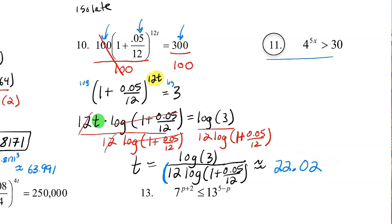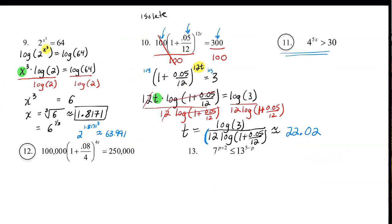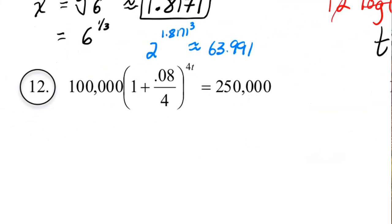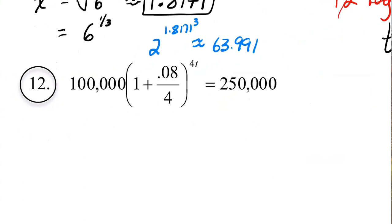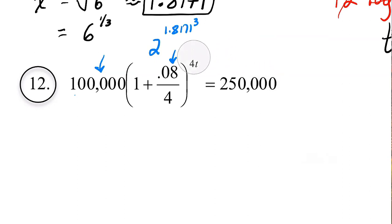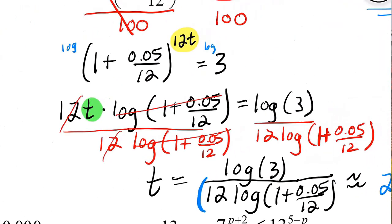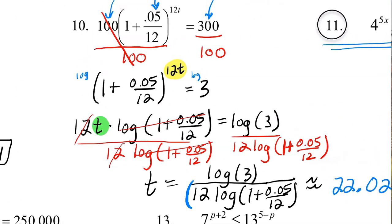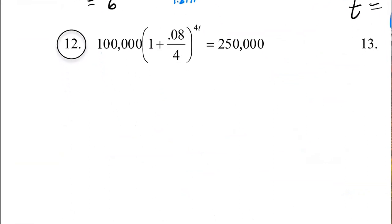Number 11 is for you. Number 11 is a little bit shorter than that one. You're starting with $100,000 — when will you have $250,000 if you have an 8% interest rate paid once every four times each year? I'd encourage you to pause the video now or rewind and watch the solution again. The steps are going to be really similar. See if you can get that — it's a try-this question.